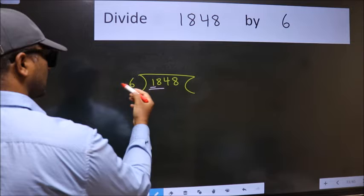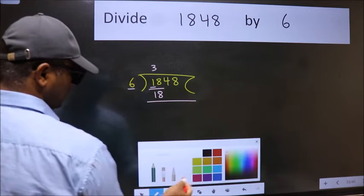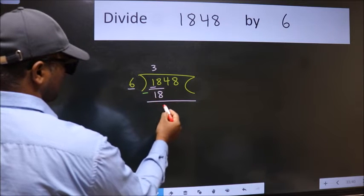When do we get 18 in 6 table? 6 threes 18. Now we should subtract. We get 0.